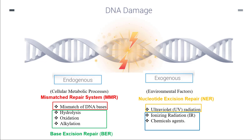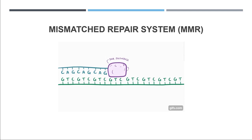For ionic radiation and chemical agents, the DNA mostly gets double strand breaks, and we have two further mechanisms for those — we will discuss double strand breaks in the next video. In this video we will discuss three different repair systems in detail: mismatch repair, base excision repair, and nucleotide excision repair.